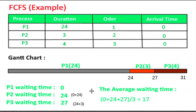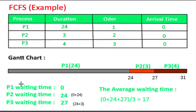For example, processes P1, P2, P3 come in order 1, 2, 3. P1 will be executed first for 24 seconds, then P2 for 3 seconds, and then P3 for 4 seconds. The Gantt chart is as follows.